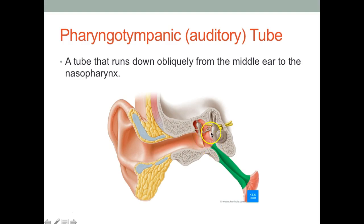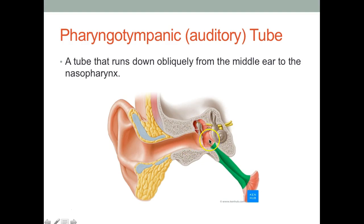If you've ever been on an airplane and reached high altitude, you'll notice that your ears are hurting and you're having a hard time hearing. So you start chewing gum or eating peanuts and your ears will pop. That popping sound is the pharyngotympanic or auditory tube opening to relieve pressure so that both sides of the tympanic membrane have the same pressure.